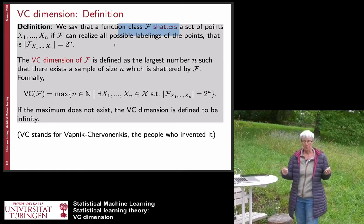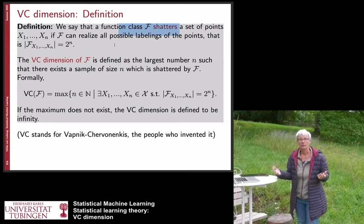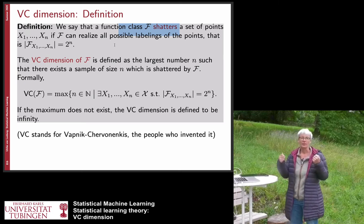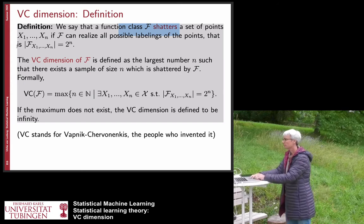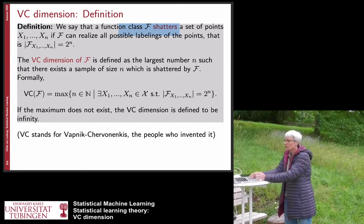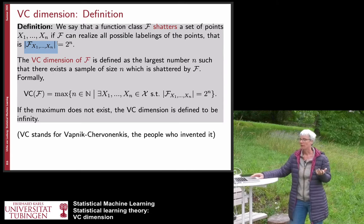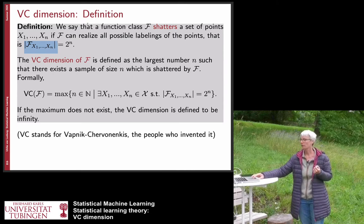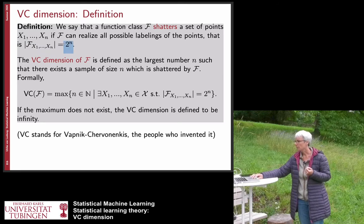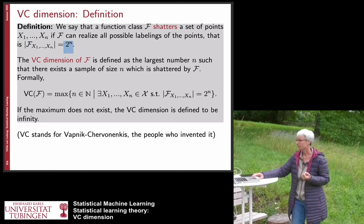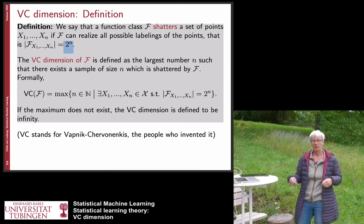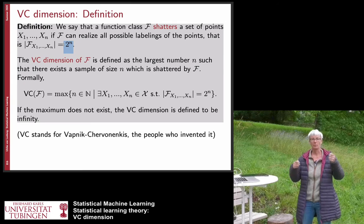So there are n points, giving 2^n many different binary labelings. We say a function class shatters a particular dataset if it can achieve all those labelings — meaning if we look at how many functions are in the function space restricted to these data points, there are exactly 2^n. For this particular set of points we can realize all labelings no matter where we put plus ones and minus ones.